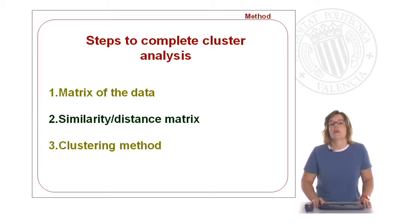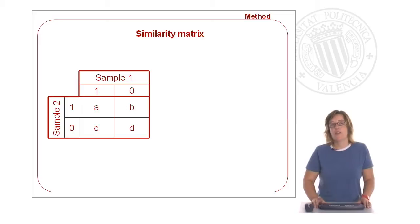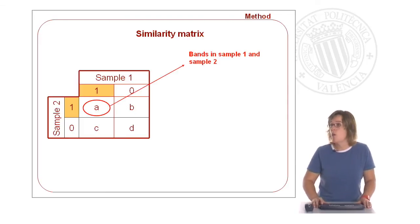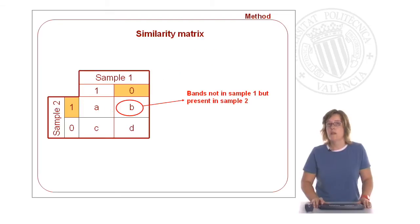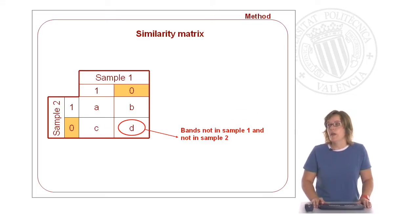Once you have the original matrix of the data, you have to transform this data into a similarity or distance matrix. To develop this transformation, you have to first establish the comparison between samples by pairs. You analyze how many bands you have in sample one and also in sample two — this will be called A. How many bands are not in sample one but are present in sample two? How many bands are present in sample one and not in sample two? This will be called C. And how many bands are not present in sample one and not in sample two?